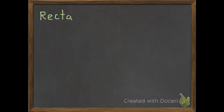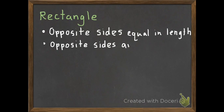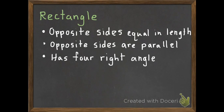Our second kind of quadrilateral is called a rectangle. First of all, the opposite sides are equal in length, just like our parallelogram. The opposite sides are parallel, just like our parallelogram. But here's the only difference: a rectangle has four right angles, whereas the parallelogram can have any kind of angles.